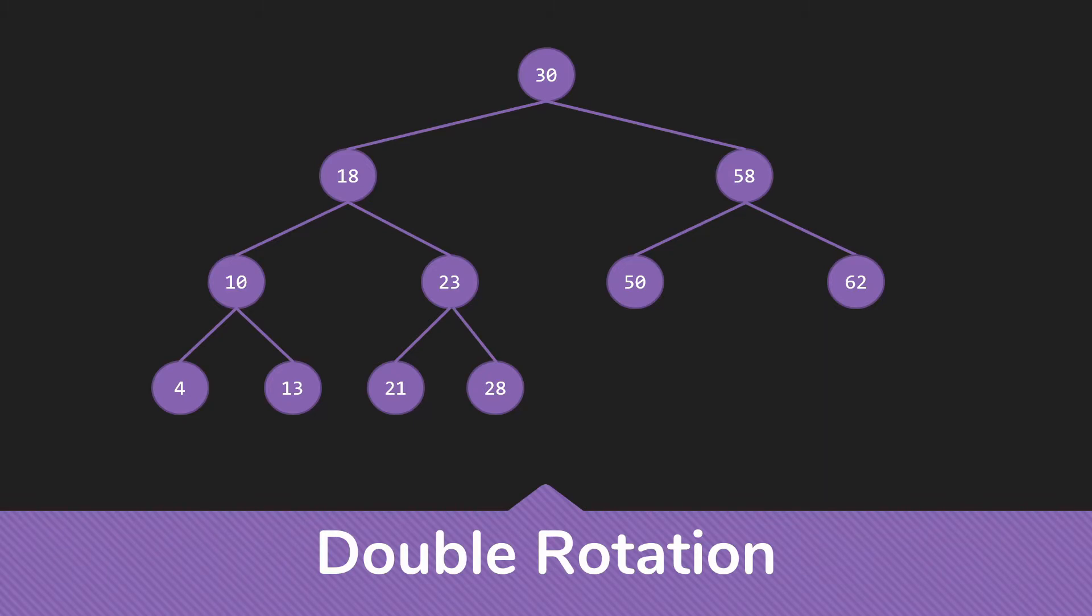So the way we know whether we're doing a single rotation or a double rotation is where the balance problem is coming from. Now, if we have two items to the same direction, left-left or right-right, then we're going to do a single rotation.